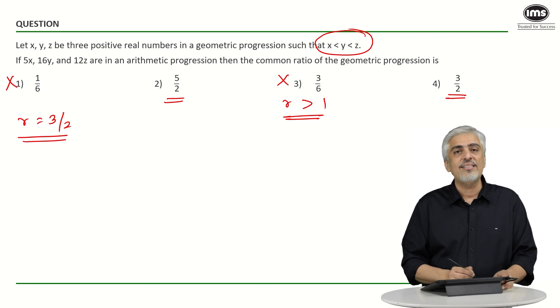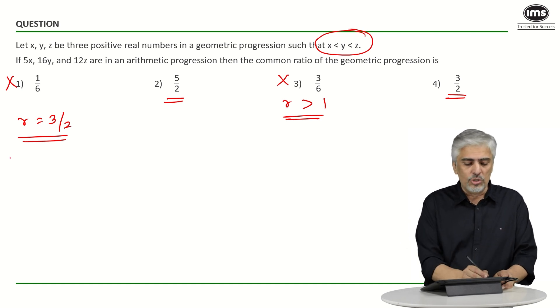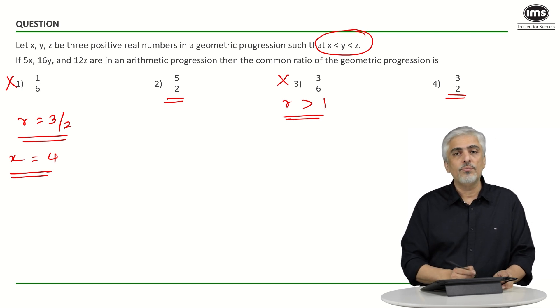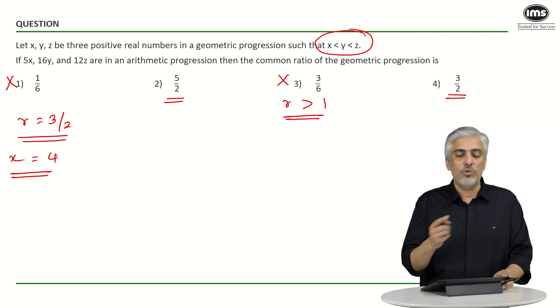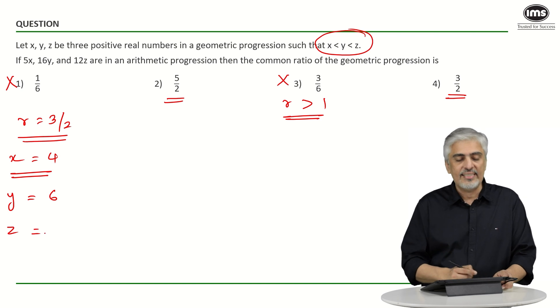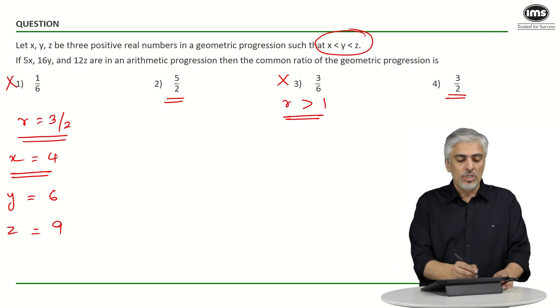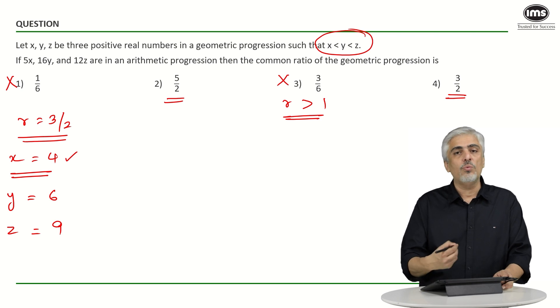If you took r as 3 by 2 and assume any values you like for x, the easiest value to assume for x would be 4. If x is 4, what will be y? It will be 4 into r, so 4 into 3 upon 2. That's 12 divided by 2, which is 6. If x is 4, y would be 6, and 6 into 3 by 2 would be 9, so z would be 9.